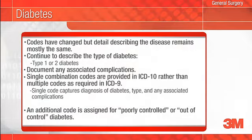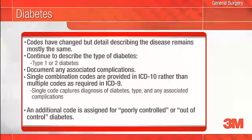The look and feel for codes describing diabetes have changed, but the level of detail describing the disease remains mostly the same. Therefore, your documentation doesn't need to change as long as you are currently documenting the type of diabetes as type 1 or type 2 and any associated complications — for example, diabetic peripheral angiopathy, diabetic autonomic neuropathy, or diabetic foot ulcer. The good news is that ICD-10 uses single combination codes to describe the disease.